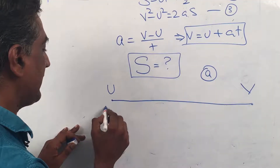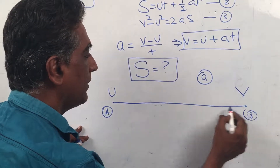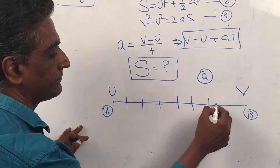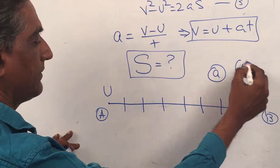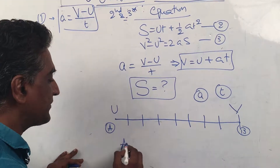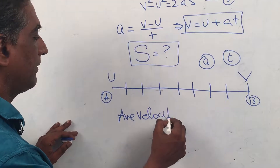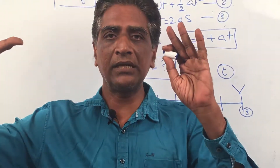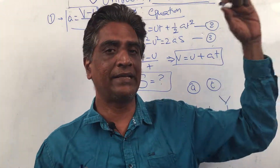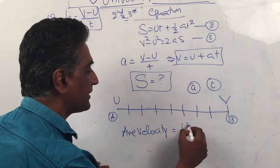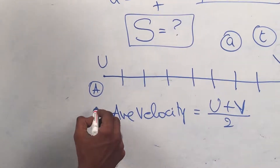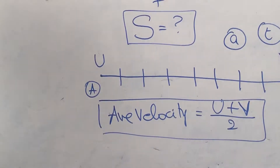This is a very interesting derivation. Consider a body going from point A to point B — every second it increases its velocity. In t seconds it went from u to v. Now let us bring in the concept of average velocity. Since it uniformly increases, we can say the average velocity is (u + v) / 2. This is the crucial linking point for deriving s = ut + ½at².